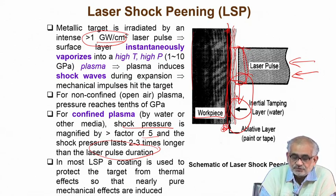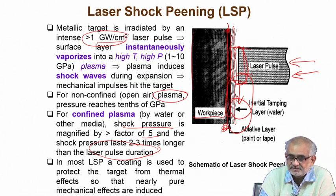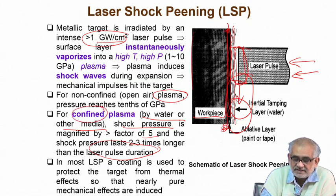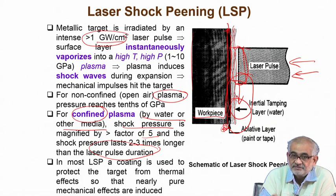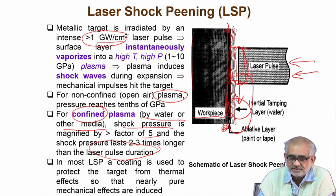To make this confinement even more effective, the shock wave created by the so-called plasma — simply the gaseous state of that substance — can be enhanced by having it in an immersed condition, immersed in water or some other medium. Confinement of the plasma gives more effect and increases the effect of such shock waves, creating residual stress. The deformation responsible for creation of residual stress is higher because of the confinement of the plasma.